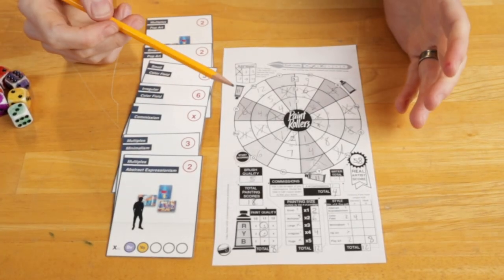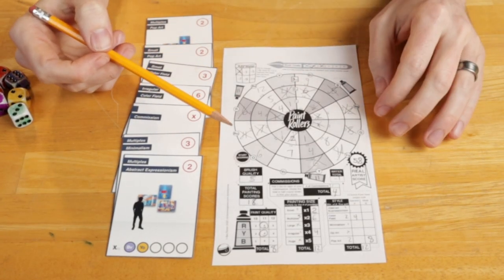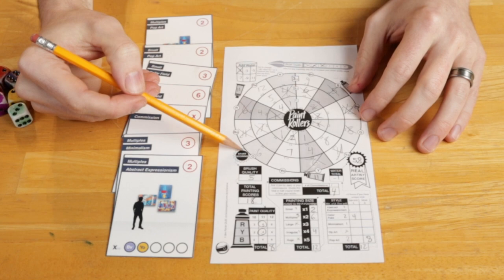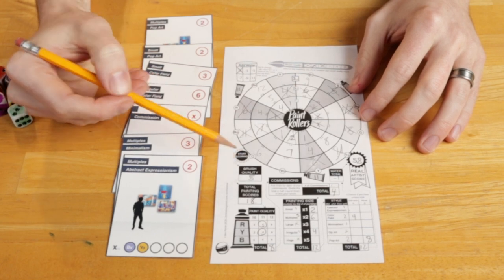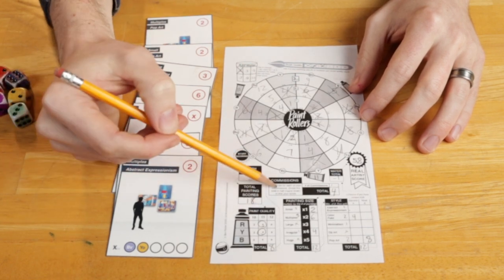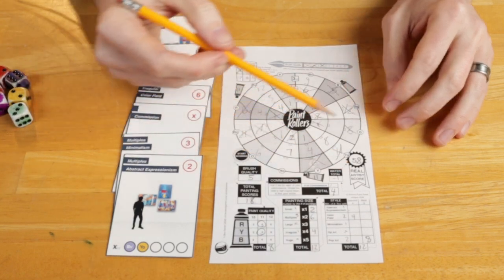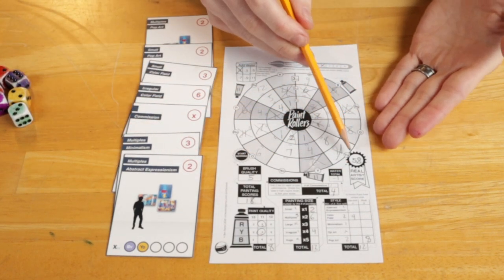And finally, you get to tally up your scores and see who the real artist is. Let's take a look at this final scoring process. Essentially, you're going to start at the start scoring section and just follow along the path, filling in each of the charts and then totaling up your score for your real artist score.